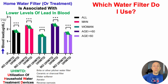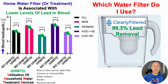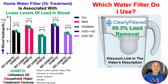So what water filter do I use? I've been using Clearly Filtered's water pitcher, which is shown here. On their website, they claim to remove up to 99.3% of lead. I can't say if this is what is causing my relatively low levels of lead or not — this is just one factor in the approach. If you want to use this pitcher yourself, there's a discount link in the video's description.